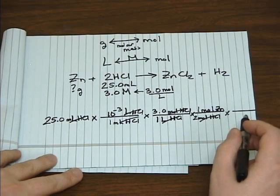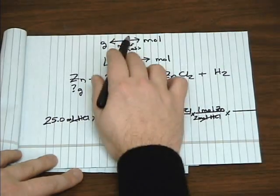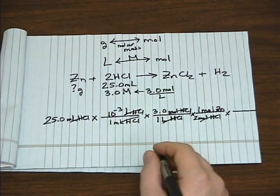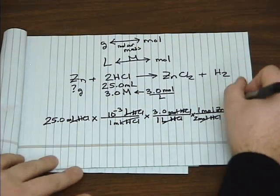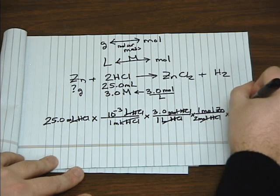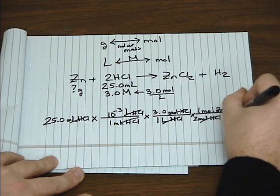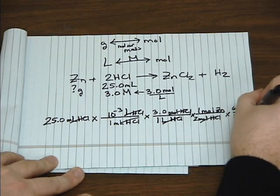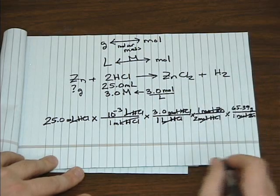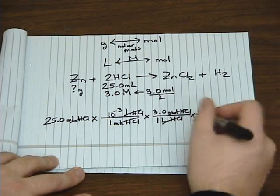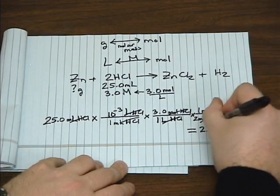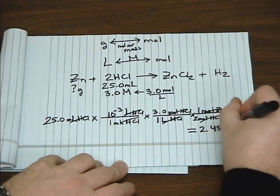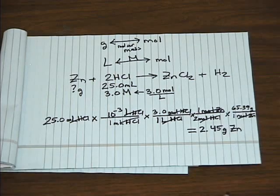And also remember to go between moles and grams, that's molar mass. So zinc's molar mass is 65.39 grams per mole. That gives us 2.45 grams of zinc.